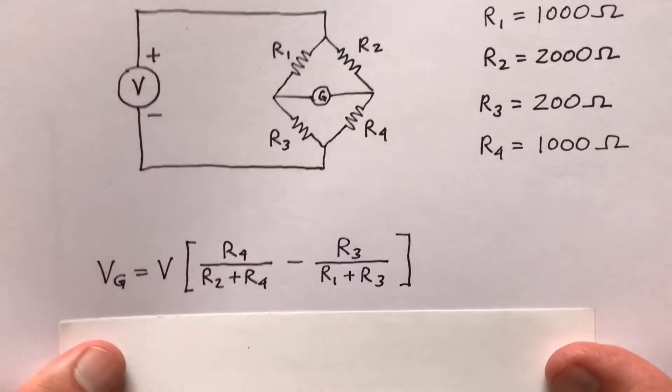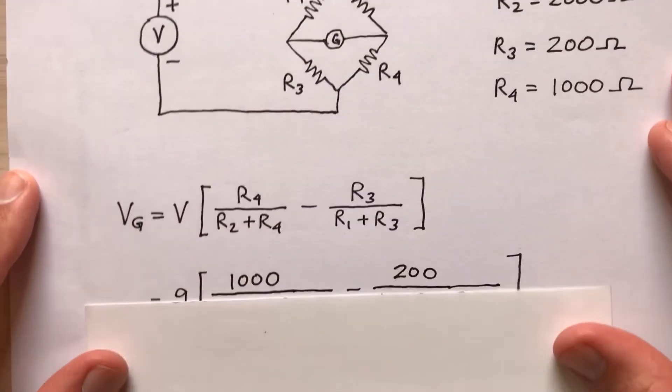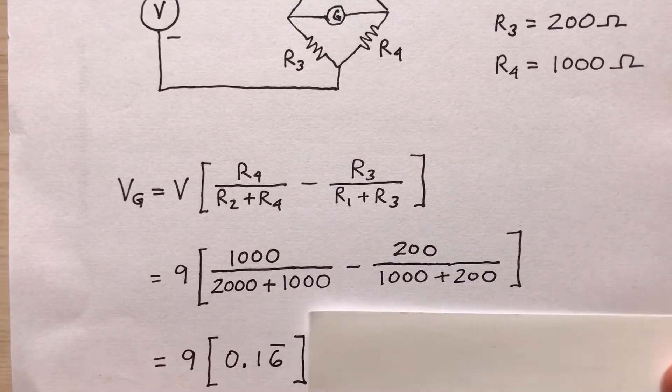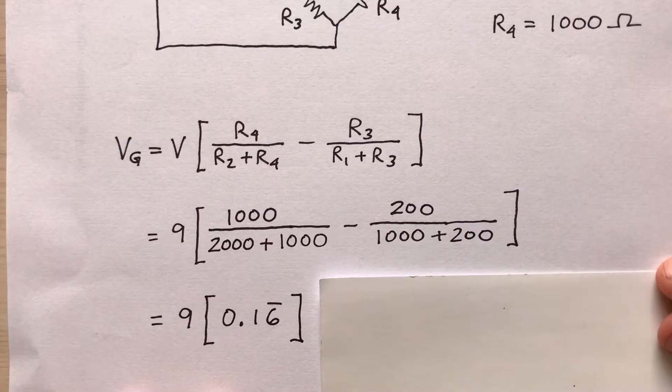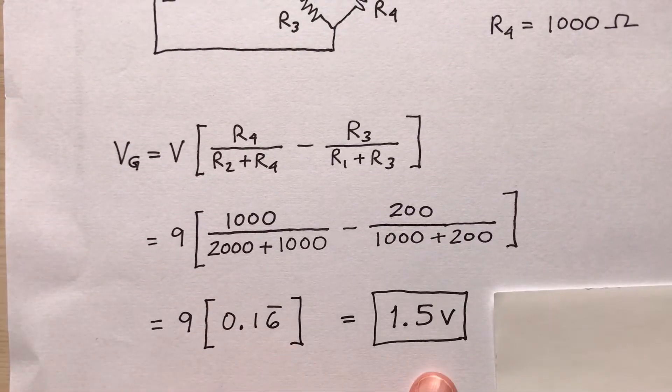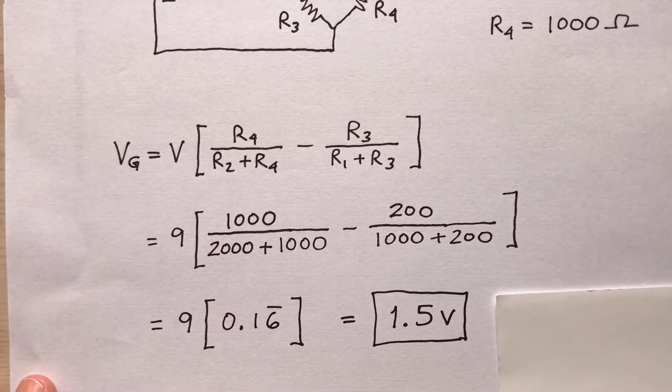Stick these numbers into the formula, so you'll have something that looks like this. Upon further simplification, the quantity in brackets becomes 0.16 repeating. So I predict 1.5 volts, the V sub G part, 1.5 volts.